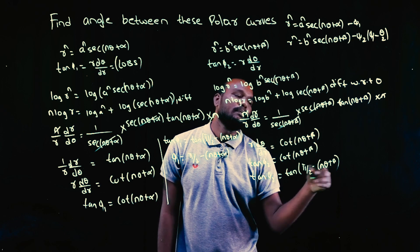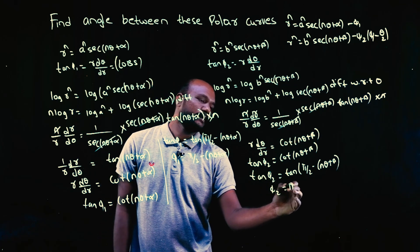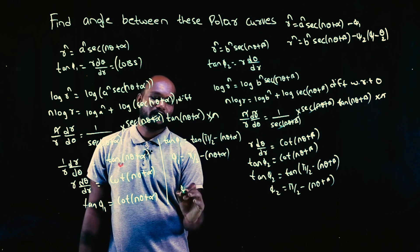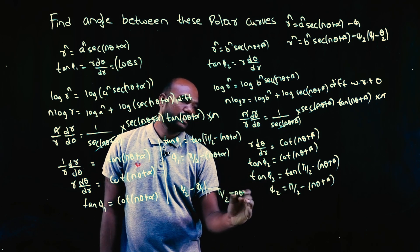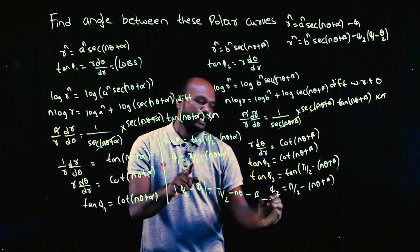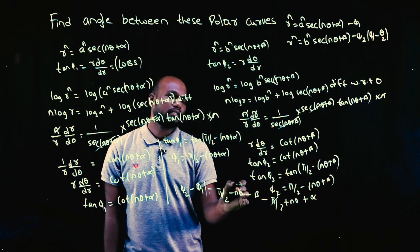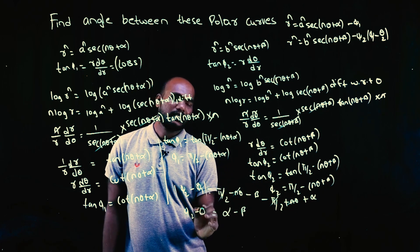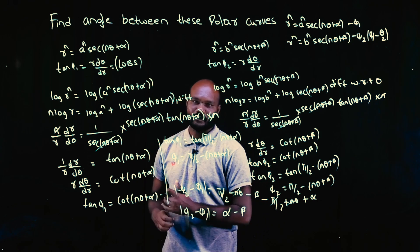Writing in terms of tan: tan φ₂ = tan(π/2 − (nθ+β)), so φ₂ = π/2 − nθ − β. Now computing φ₂ − φ₁: (π/2 − nθ − β) − (π/2 − nθ − α). The π/2 terms cancel, the nθ terms cancel, leaving φ₂ − φ₁ = α − β. We cannot simplify further, so the angle between the curves is α − β.